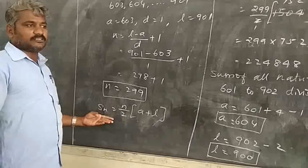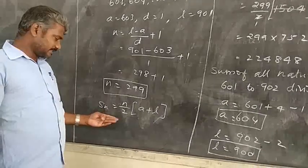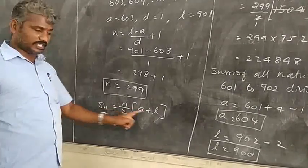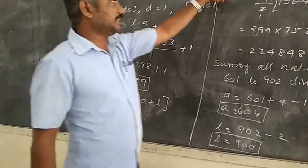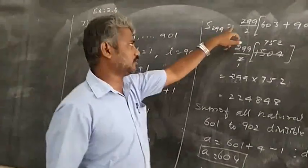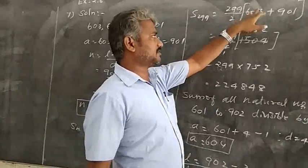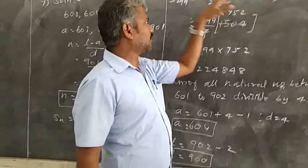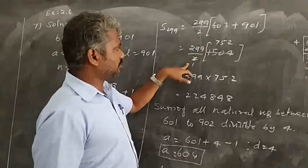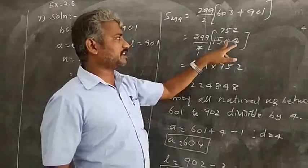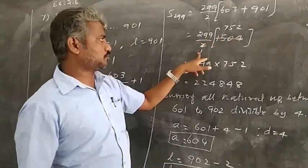Sum of n arithmetic series: Sn equals n by 2 times A plus L. N value 299, so 299 by 2 times 603 plus 901. 299 divided by 2, 12A means 1504.